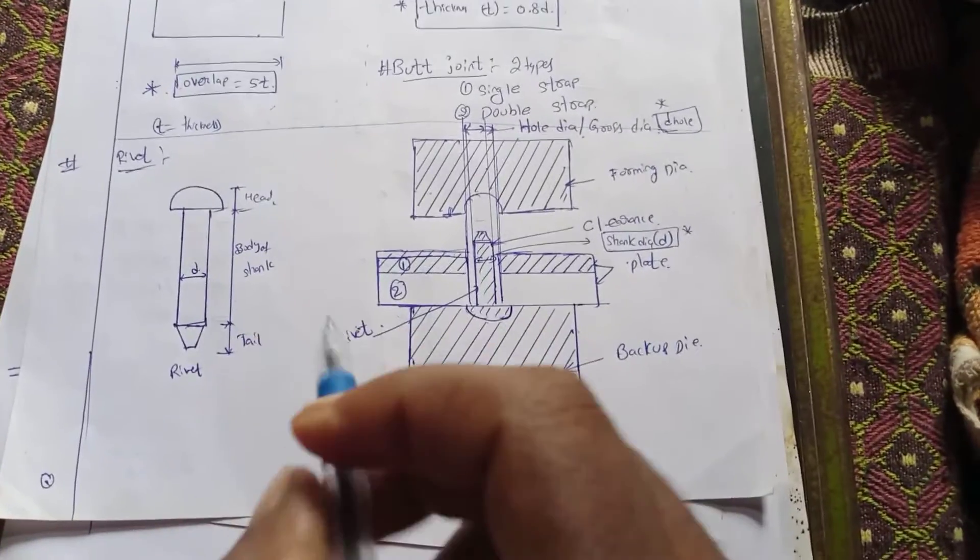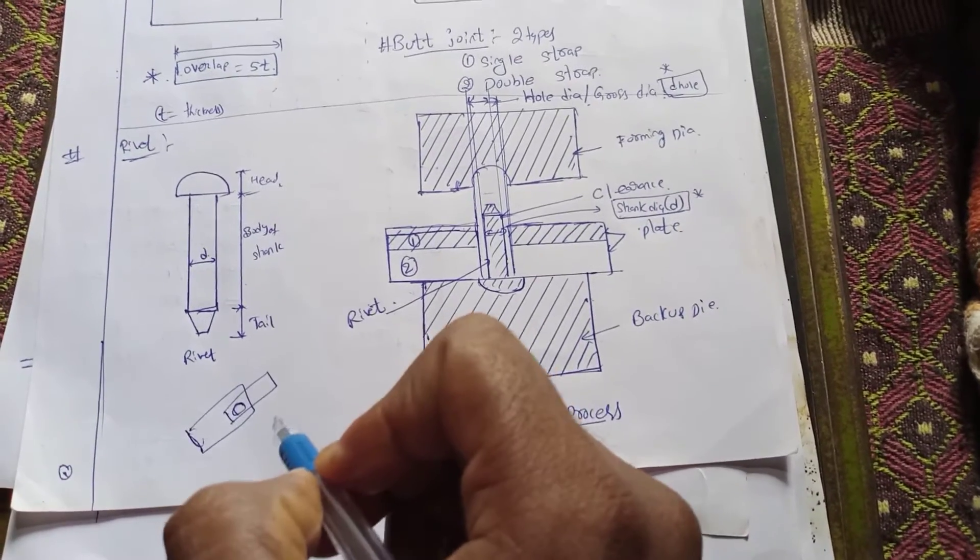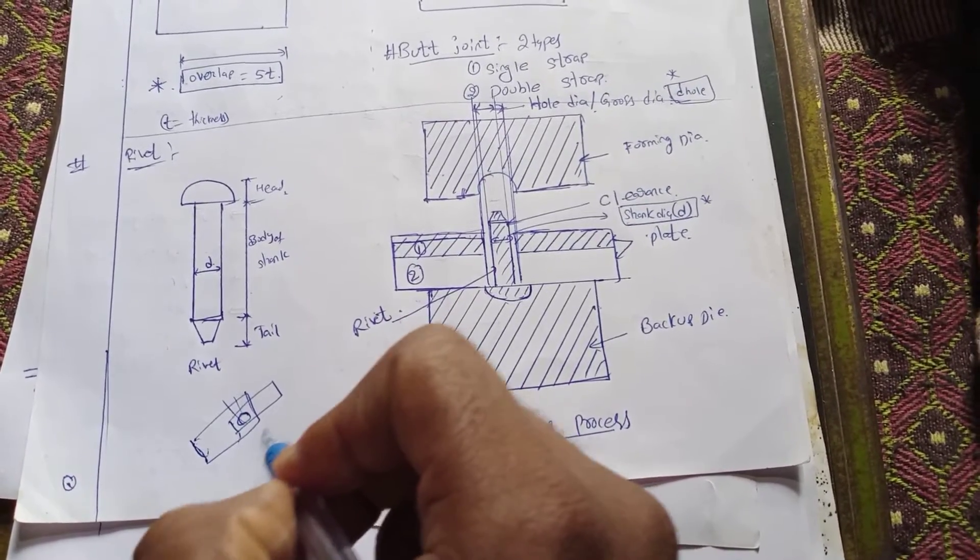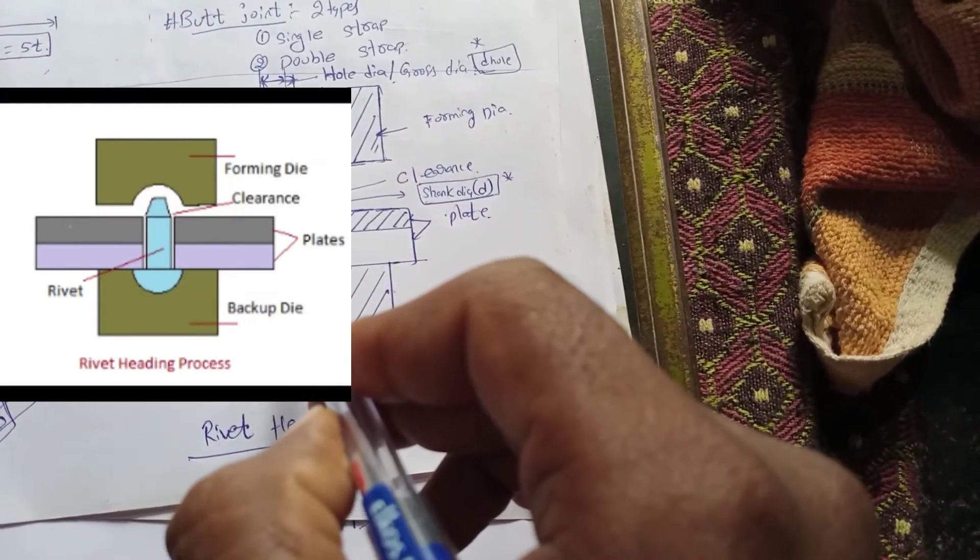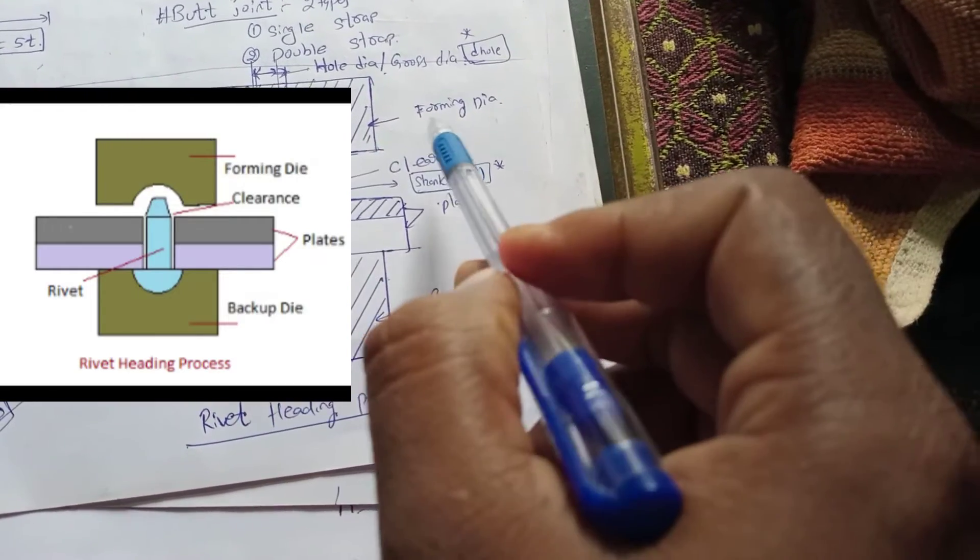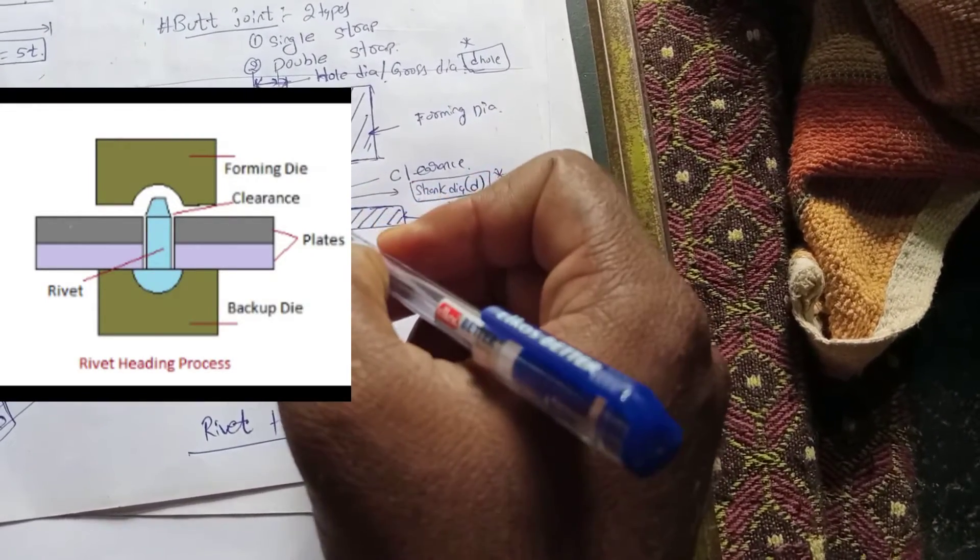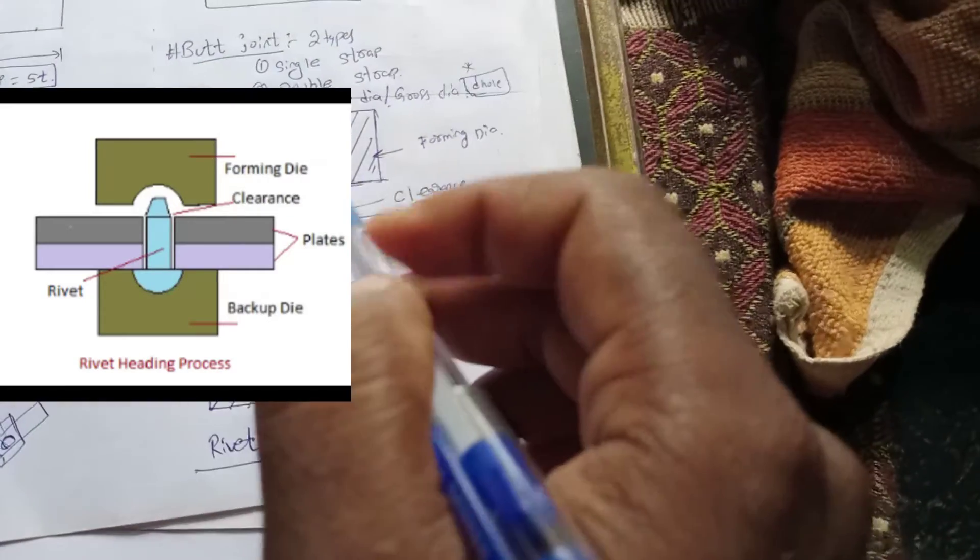I will put the rivet in the two plates. First, I will drill a hole with the drill bit. Then I will put the rivet inside. This is the rivet heading process. This is the two pieces - we put the rivet and form the top portion into this shape.